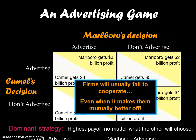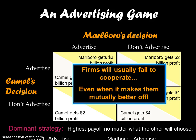When both firms have a dominant strategy that matches up, we call that the Nash equilibrium. In this game, the Nash equilibrium would be for Marlboro and Camel both to advertise. The Nash equilibrium is what's going to happen in reality. In the practice problem packet, there's a great example and explanation of this that looks at Pepsi versus Coke, so take a look at that as well.